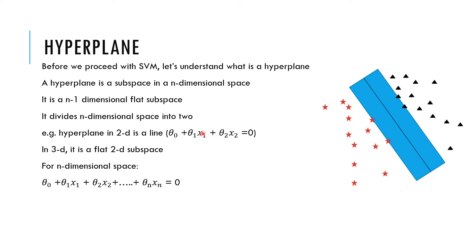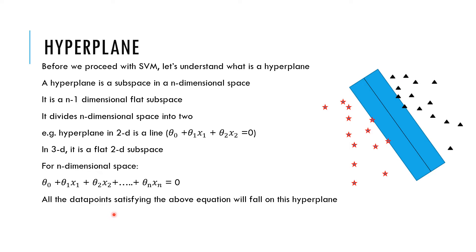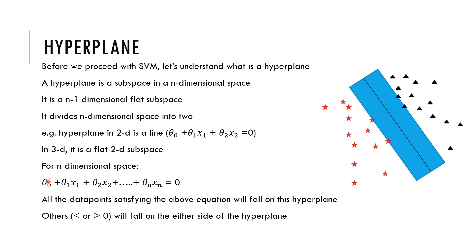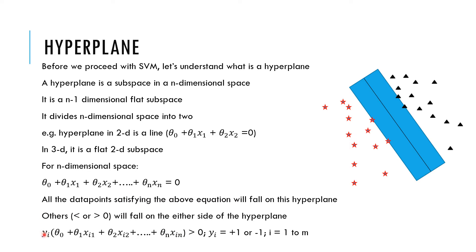For an n-dimensional space, the hyperplane is defined by the equation: theta_0 + theta_1*x1 + theta_2*x2 + ... + theta_n*xn, where x1 through xn are the different variables or dimensions, and the thetas are coefficients. All data points satisfying this equation fall on the hyperplane itself — not on either side of it. Data points with values greater than or less than zero fall on one side or the other of the hyperplane.